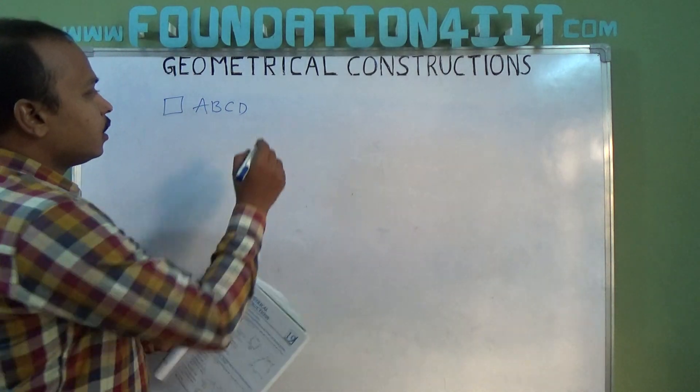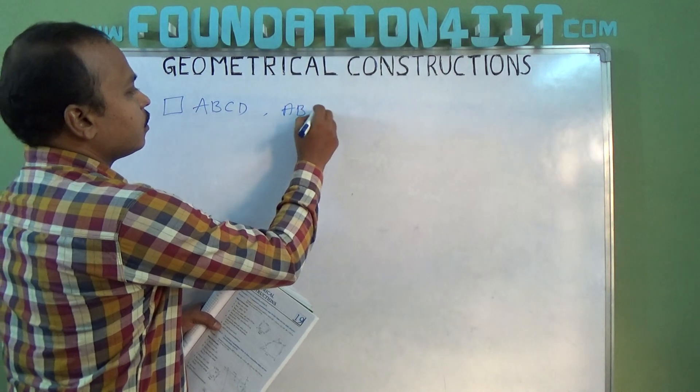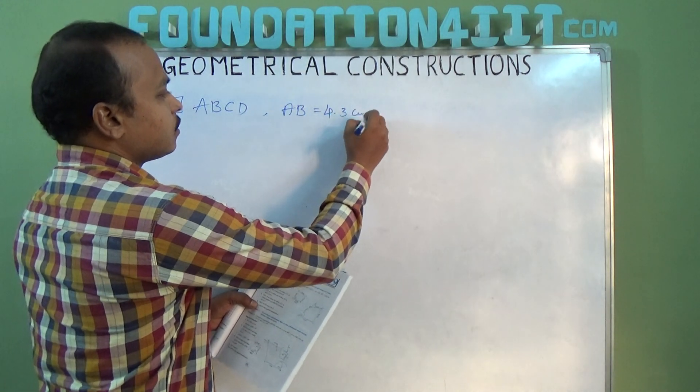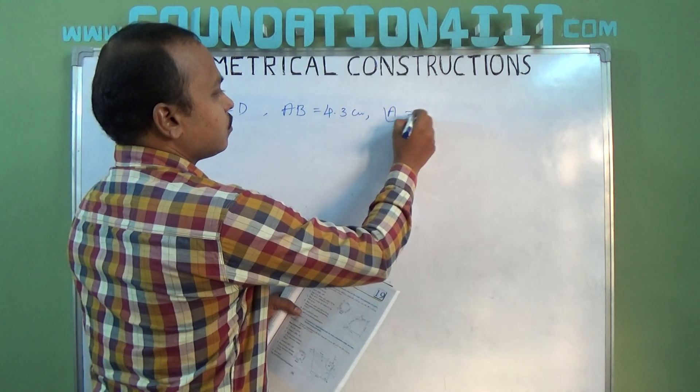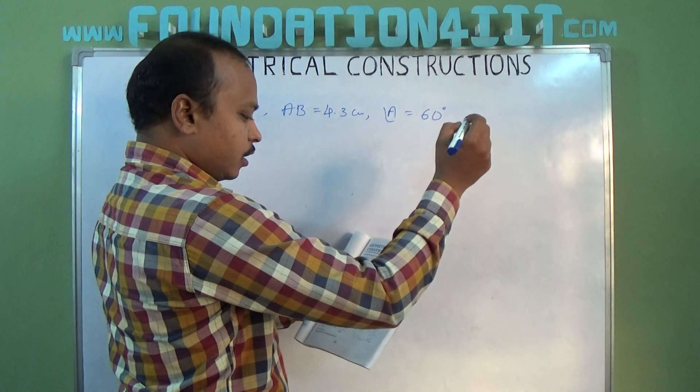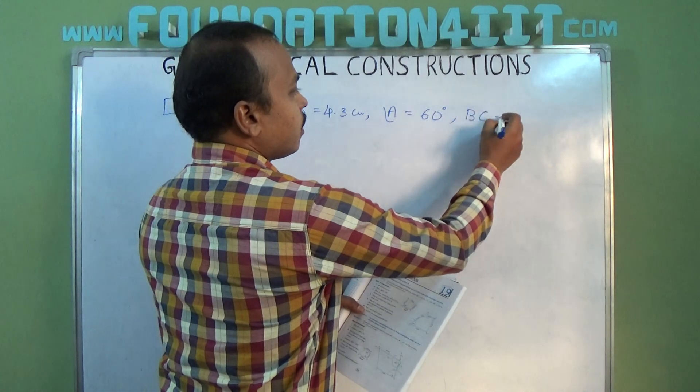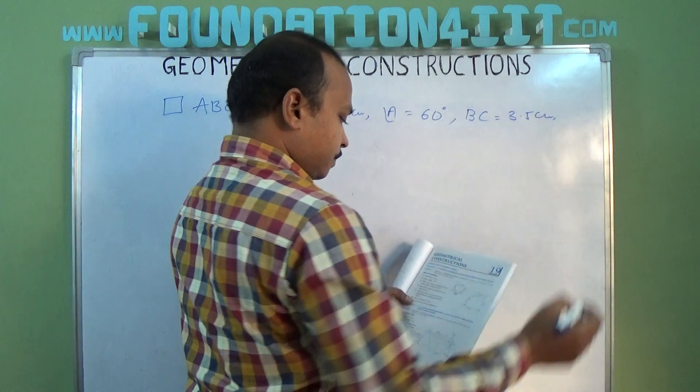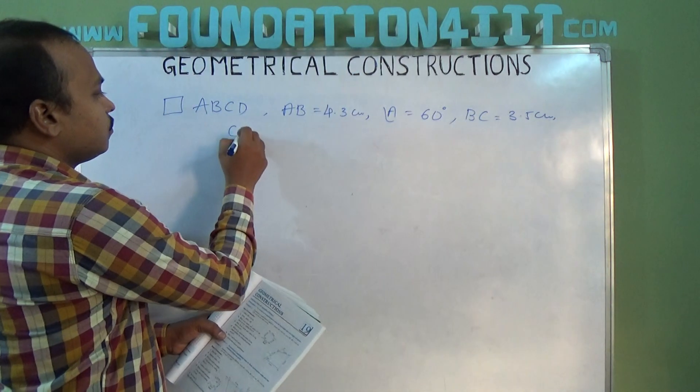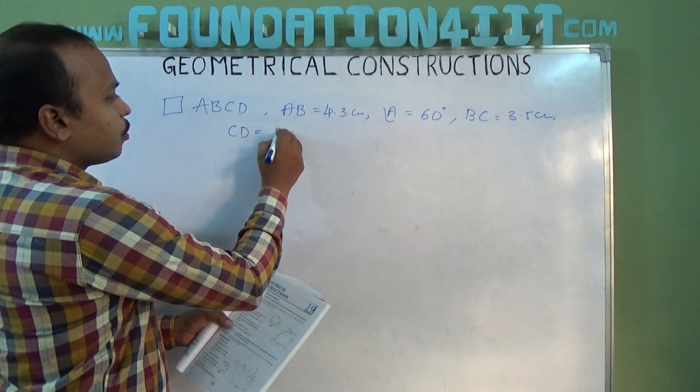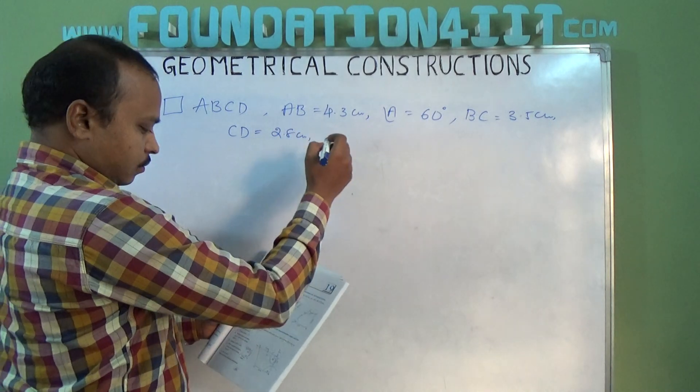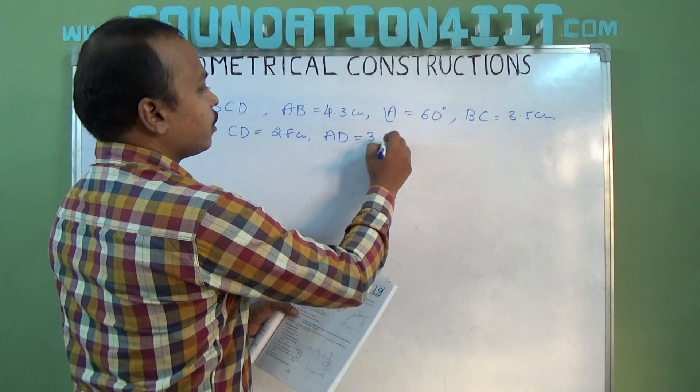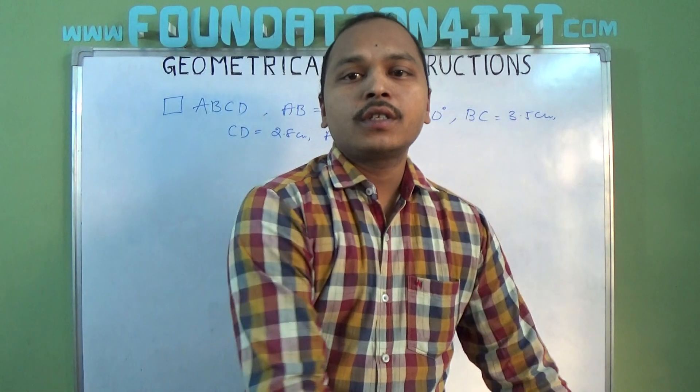The values are: AB is equal to 4.3 centimeters, angle A equals 60 degrees, BC equals 3.5 centimeters, CD equals 2.8 centimeters, and AD is equal to 3.3 centimeters. This is the question: four sides and one angle given.